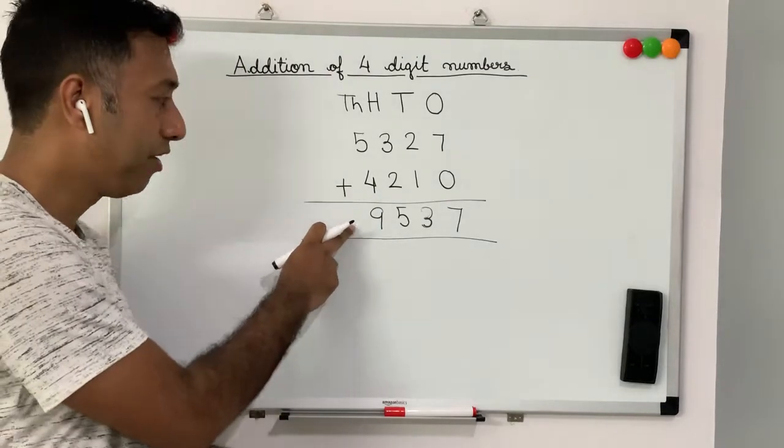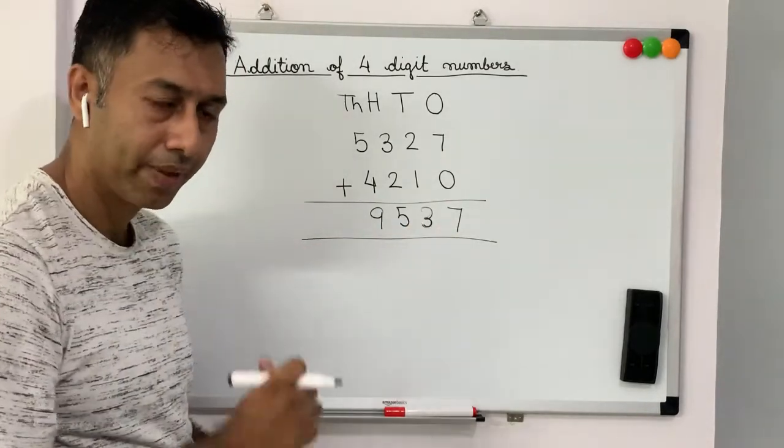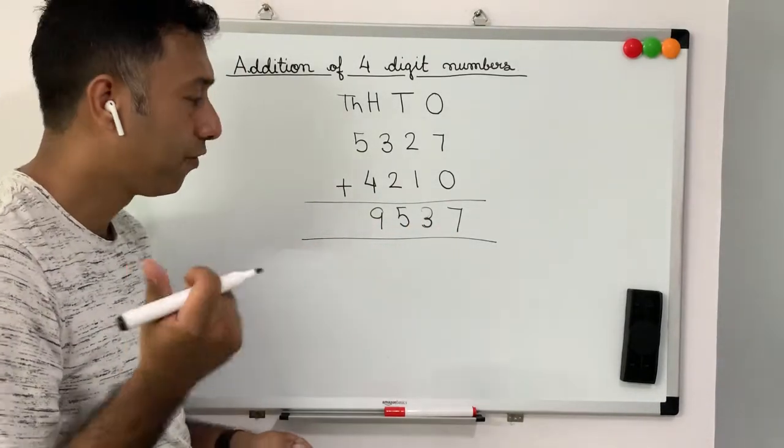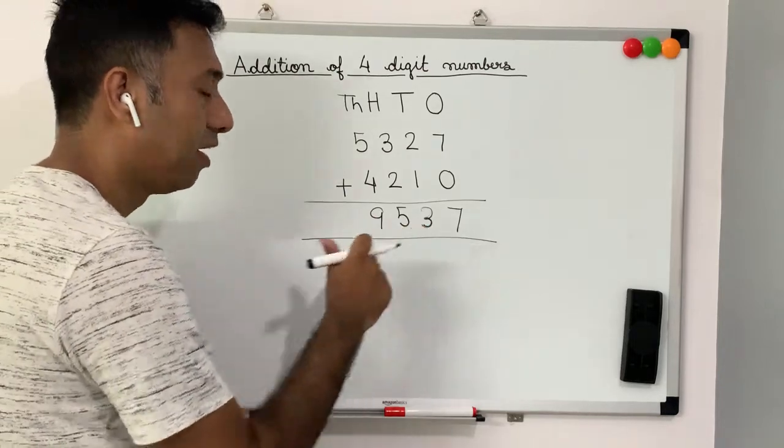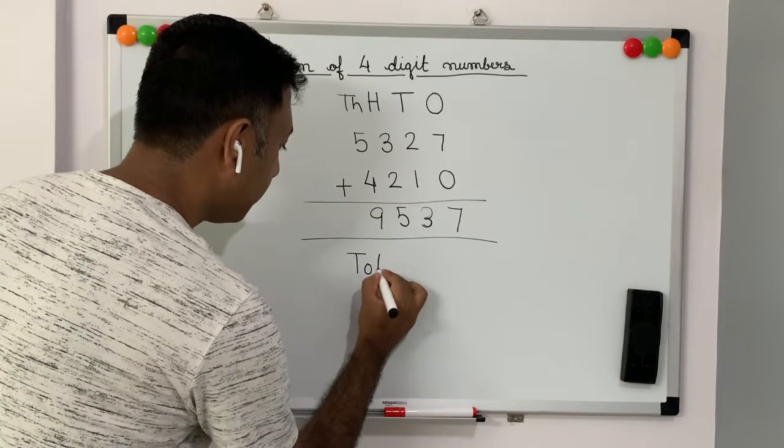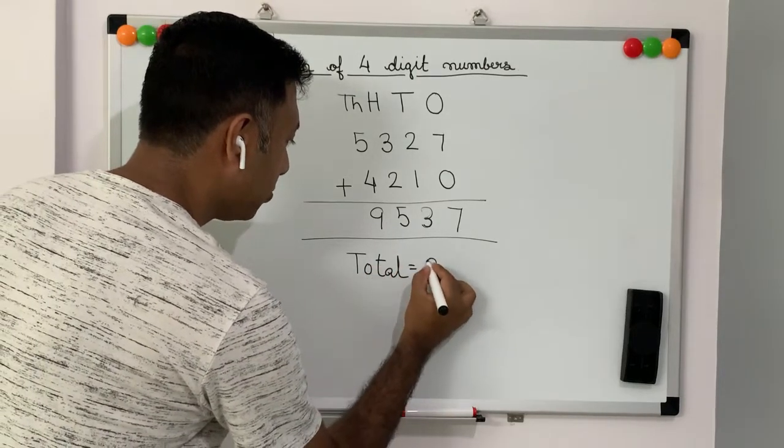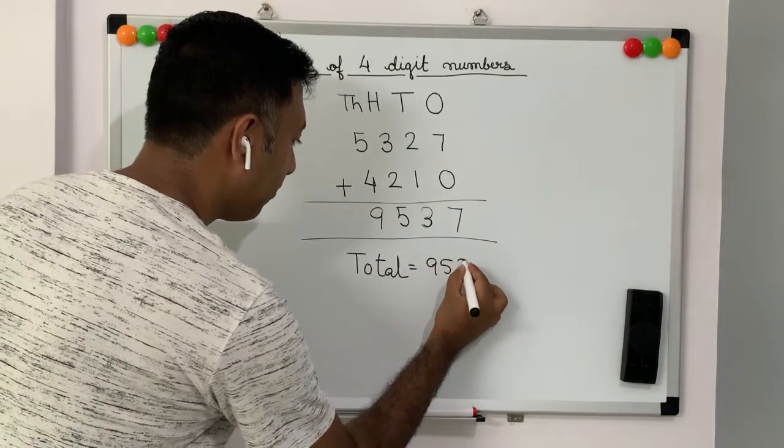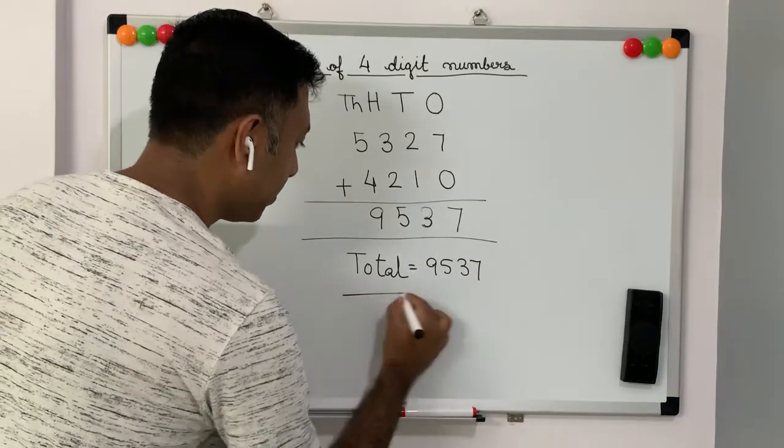Did you get this answer? 9, 5, 3, 7. Quickly check your copy. If you got 9, 5, 3, 7, excellent work. So, we will write total equal to 9, 5, 3, 7.